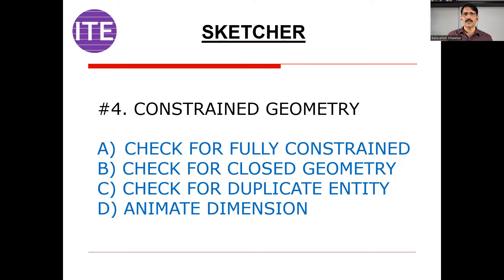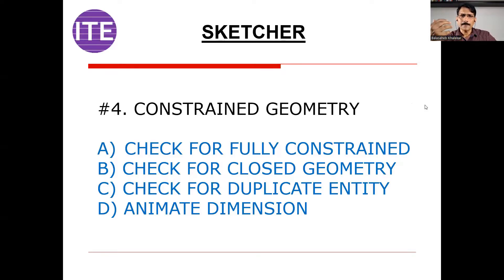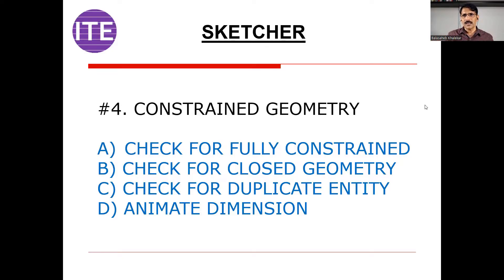Then next is animate dimension — a very powerful command. Some softwares call it animate dimension, some call it animate constraint. This is an important question generally asked during interviews. Animate dimension means you can check the behavior of your sketch. When you create your sketch and give some dimensions, click on the animate dimension command, select one dimension, and it will show you the behavior of the sketch. You will understand which constraints you still need to provide. So animate dimension is used to check sketch behavior and identify areas where constraints are needed. Ensure that your sketch is fully constrained.